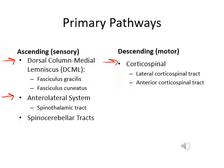Now there are a lot of ascending and descending pathways, but we only focus on some of them. For the descending or motor pathway, we will focus on the corticospinal tract, which includes the lateral and anterior corticospinal tract. For the ascending or sensory pathway, we will focus on the dorsal column medial lemniscus, which includes the funiculus gracilis and the funiculus cuneatus, and then the anterior lateral system, which includes the spinal cerebellar tract.